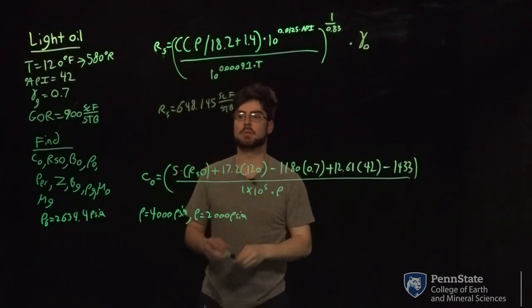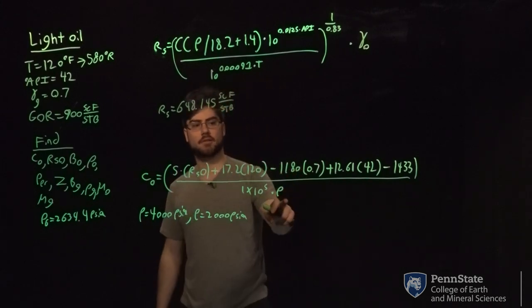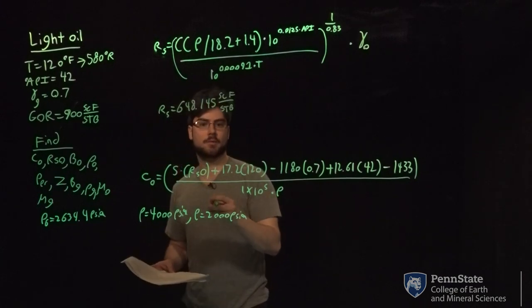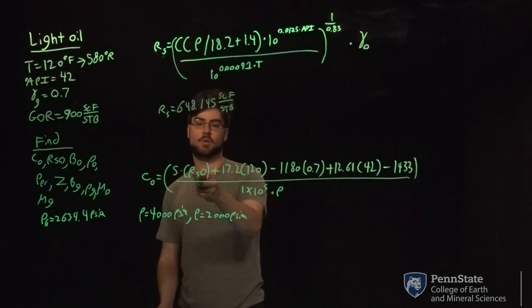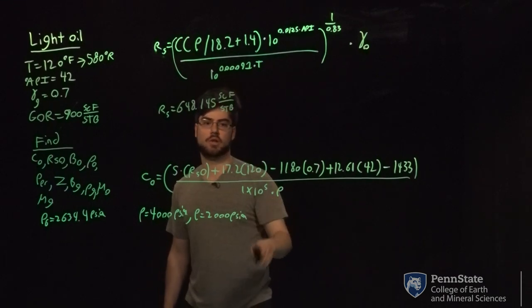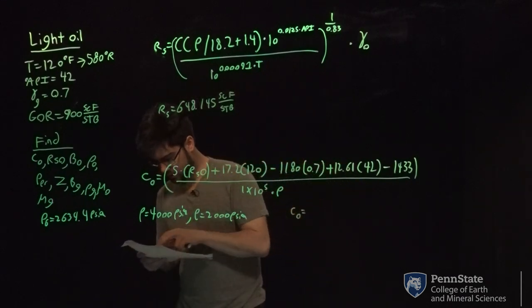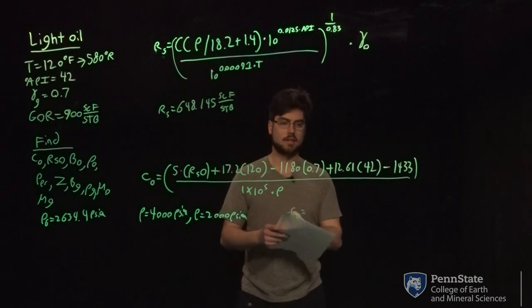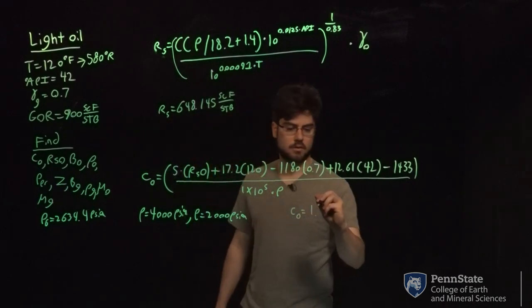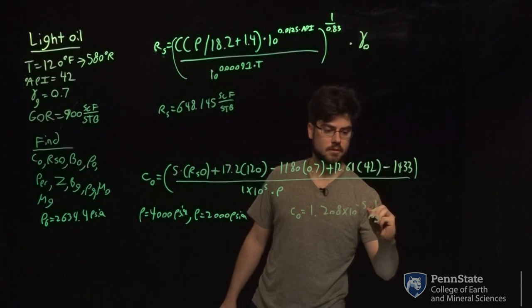Once you have the R_S value, you can plug into the compressibility equation. Since we're calculating compressibility above bubble point at 4000 PSI, R_S is constant at 900 (the bubble point value). Plugging into equation 3.46A gives the compressibility of oil at 4000 PSI equal to 1.208 × 10^−5 (1/PSI).